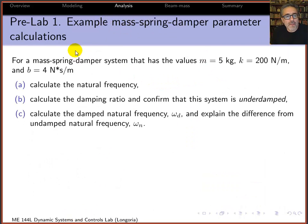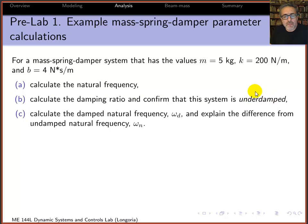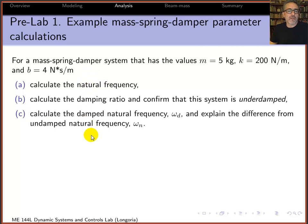Pre-lab 1: For a mass-spring-damper system with given values of mass, stiffness, and damping b, calculate the natural frequency, calculate the damping ratio ζ, and confirm the system is underdamped. Also calculate the damped natural frequency and explain the difference between damped natural frequency and undamped natural frequency. This is practice applying those equations.